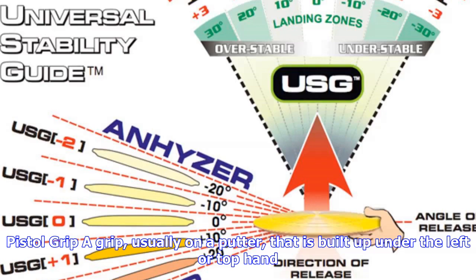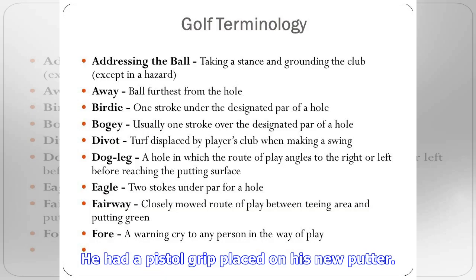Line: the intended path of the ball, usually referred to in the context of putting. She judged the line perfectly and made the putt.